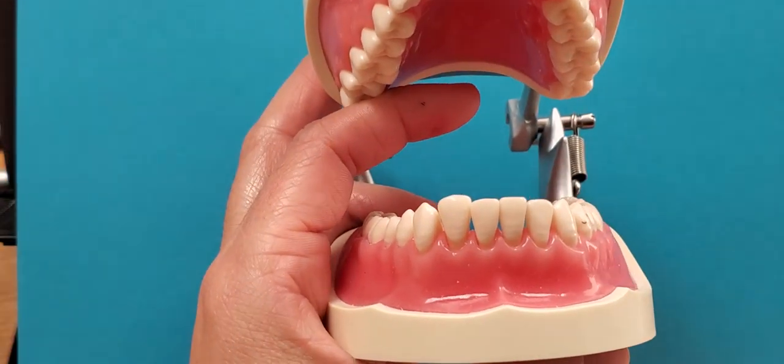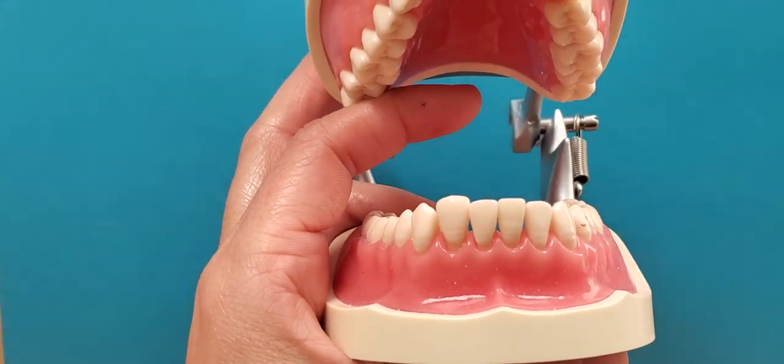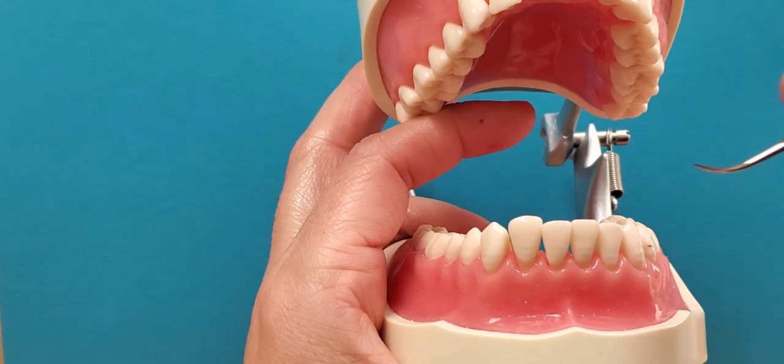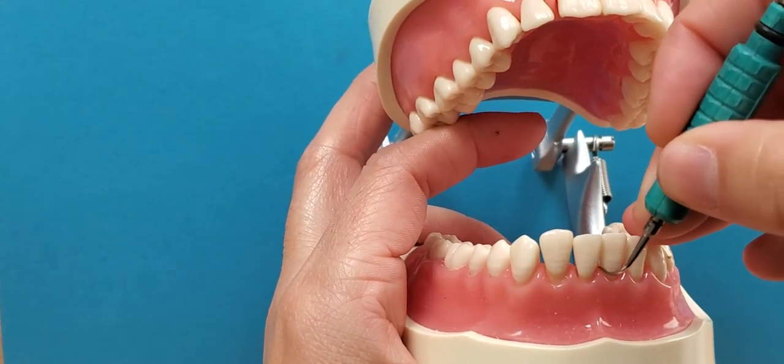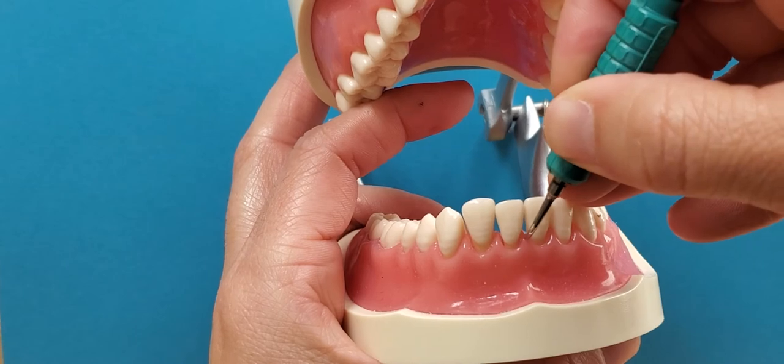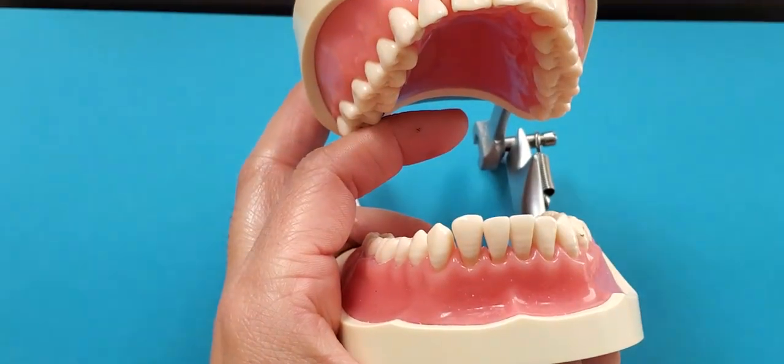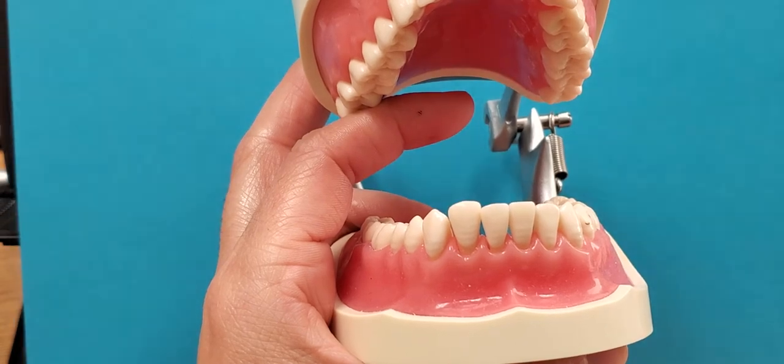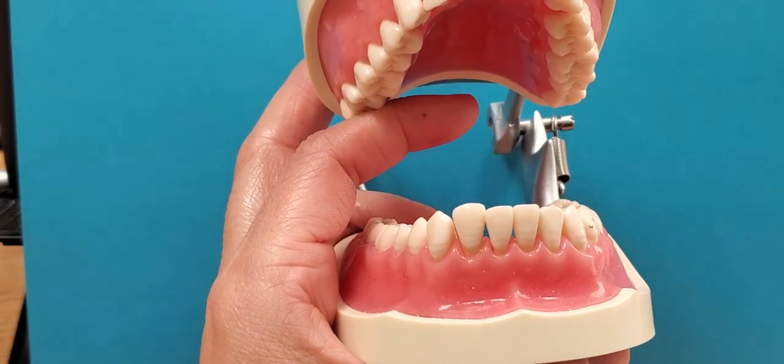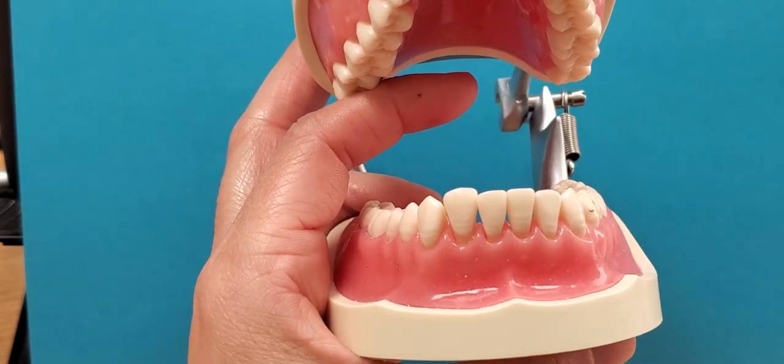Just like with probing and with using curettes, your patient operator positioning for curette style does need to change for towards and away surfaces. For probe style you do not need to change your patient operator positioning just like you don't with probing.